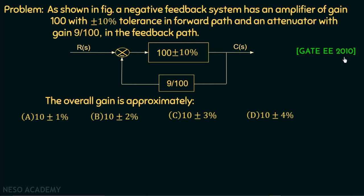Please pause and try this question on your own. Moving on to the solution, we need to understand two things: if the gain of any block is greater than one it is called an amplifier, and if the gain is less than one it is called an attenuator. In this system, an amplifier with gain 100 and tolerance of plus/minus 10% is in the forward path, and an attenuator of gain 9/100 is in the feedback path.